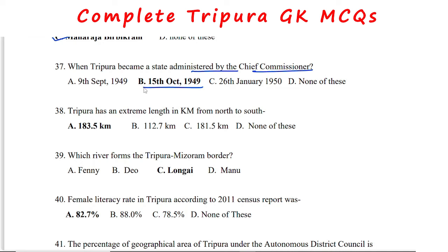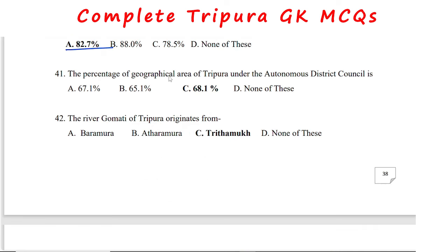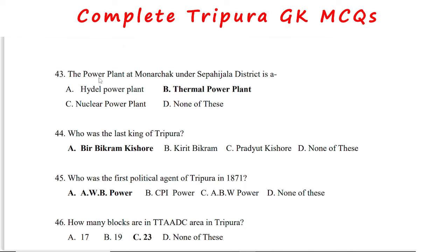Neermahal was built by Maharaja Virbikram Kishore Manika. Tripura became a state administered by the chief commissioner on 15th October 1949. The extreme length of Tripura from north to south is 183.5 km. The river Longgai forms the Tripura–Mizoram border. The female literacy rate in Tripura according to the 2011 census was 82.7%. The percentage of geographical area under TTADC is 68.1%.